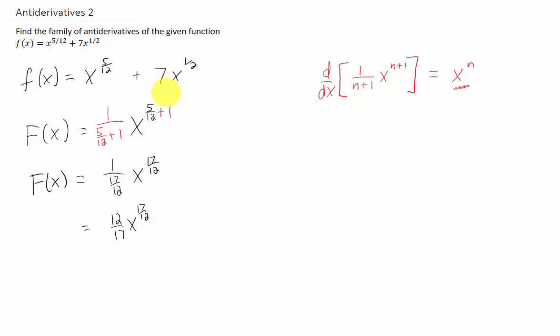Okay, let's do it again with this term. We have 7x to the 1 half, and to find the antiderivative of this, we add 1 to the power on x, and we divide by that new power.